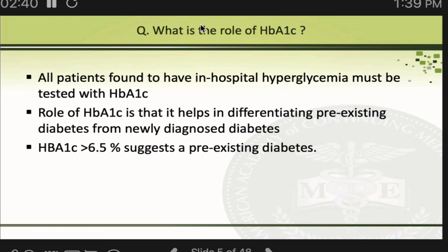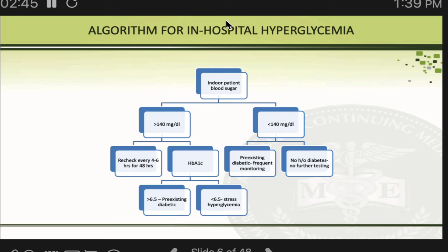Where does HbA1c come into this picture? Any patient with a random sugar more than 140 should have an HbA1c sent. HbA1c helps in two situations: if it is more than 6.5, it indicates pre-existing diabetes — the patient already had diabetes, whether they knew it or not.